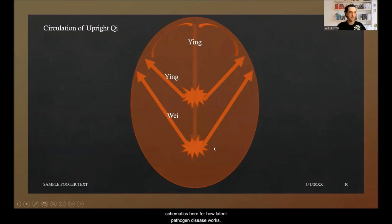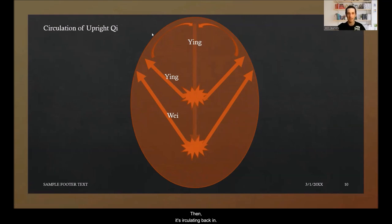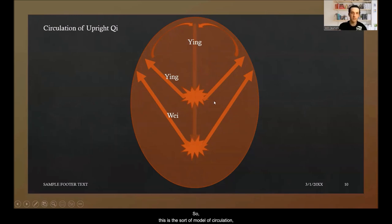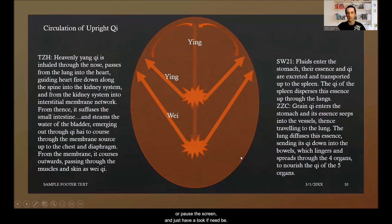Here I'm showing a physiological model of upright qi circulation — ying qi moving outward from the middle burner to the surface, wei qi moving from the lower burner to the surface, circulating back in, and ying qi flushing down into the organs and bowels. I have a model for wei qi on the left and a model for ying qi on the right — feel free to pause the screen and take a picture.